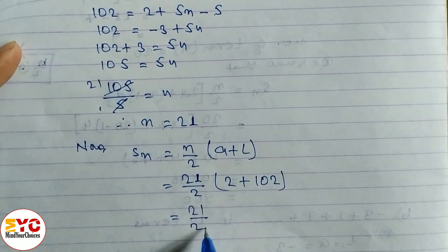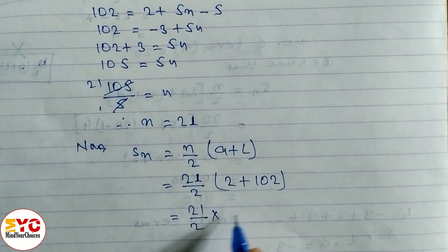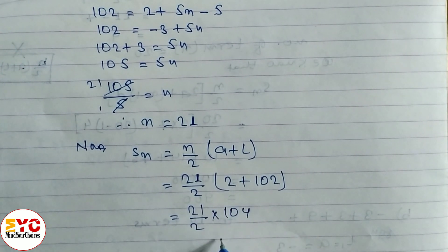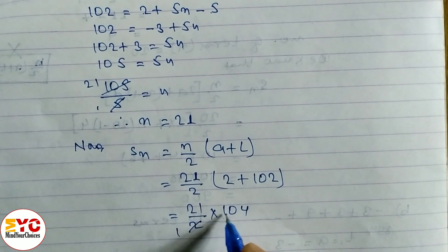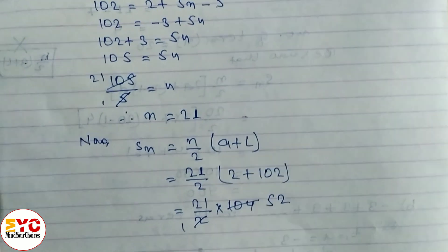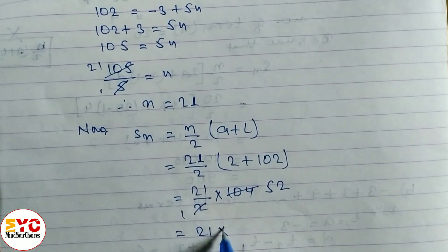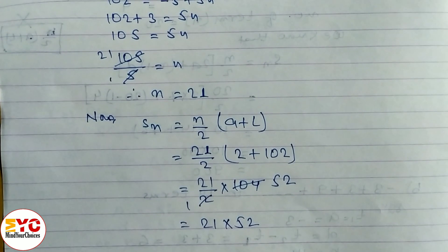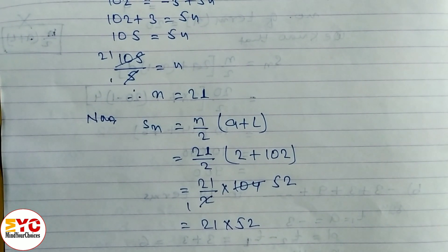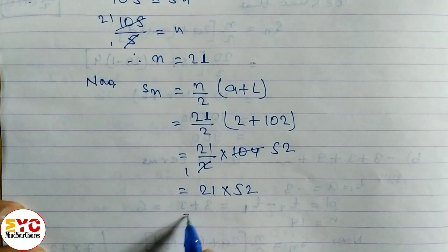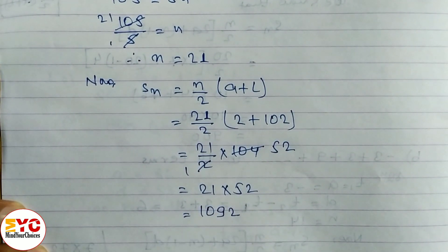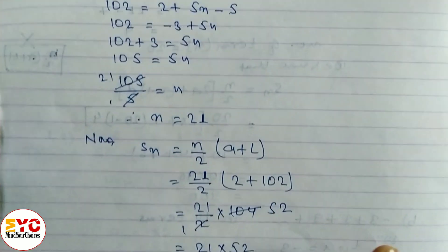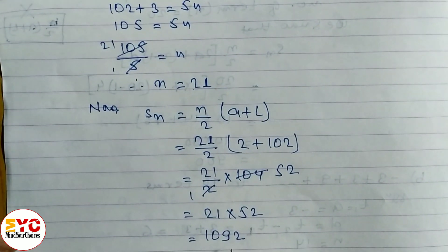Calculating: 2 + 102 = 104. Then 21/2 × 104 = 21 × 52 = 1092. So the sum of 21 terms is equal to 1092.